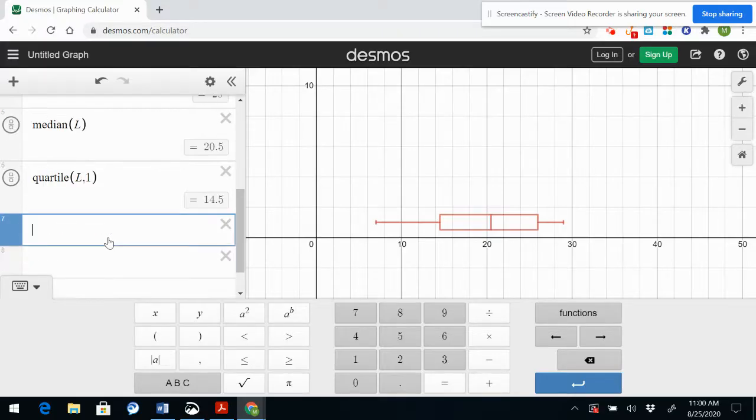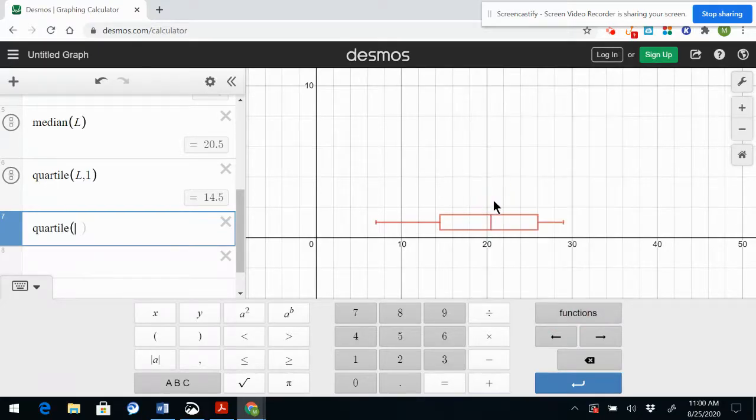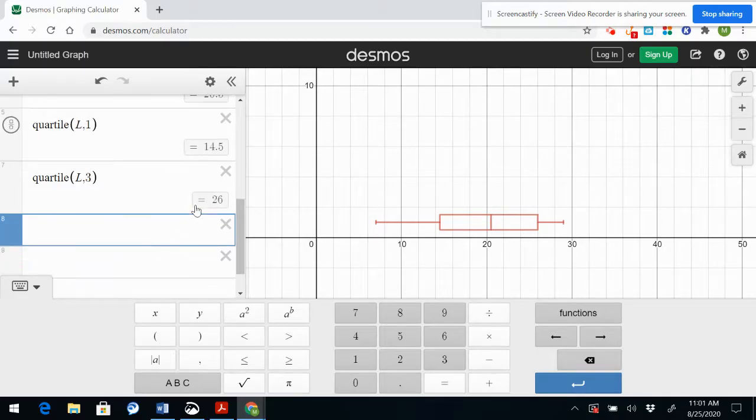So L comma 1, that'll give me the first quartile 14.5, again corresponds to my box plot. And now for the third quartile, again over to functions quartile, I want my list L quartile 3 and I get 26 which is located right here.